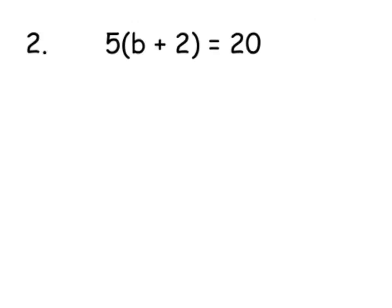Right, question 2. We have 5 in front of the brackets. We're going to times everything by 5. So we've got 5 times b is 5b, we've got 5 times 2 is 10, and that equals 20. Because 20 is not in the brackets, we leave it as is. Then I need to counteract the plus 10, so I'm going to take off 10 from each side of my equation.